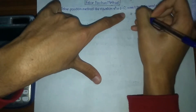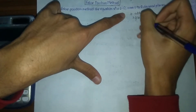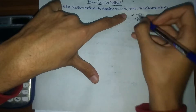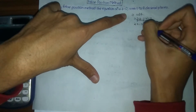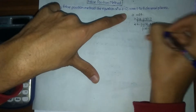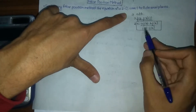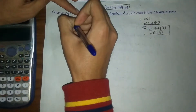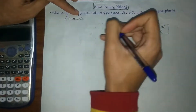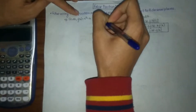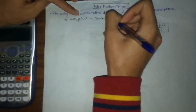In the false position method, we will be choosing a and b such that f(a) times f(b) is less than 0, which is the same as the bisection method discussed in the previous video whose link you can find in the description box below. We will be finding x using the formula: x equals a·f(b) minus b·f(a) divided by f(b) minus f(a). So given f(x) equals x cube minus x minus 1, and our tolerance is 4 decimal places.